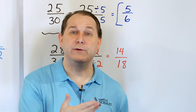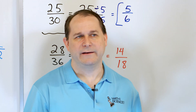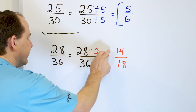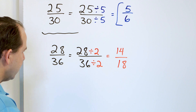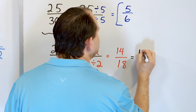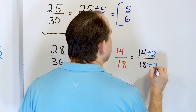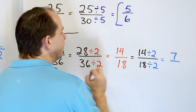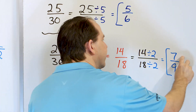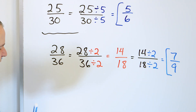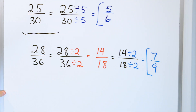Now we have 14/18, which is also even, so let's do the same process again. Divide both by 2: 14 divided by 2 is 7 because 7 times 2 is 14, and 18 divided by 2 is 9 because 9 times 2 is 18. The answer is 7/9. This cannot be simplified any further, so that's the final answer.